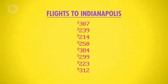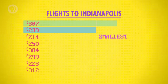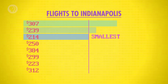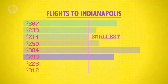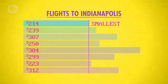Let's start with a simple algorithm. First, let's scan down the array to find the smallest number. Starting at the top with 307 — it's the only number we've seen, so it's also the smallest. The next is 239 — that's smaller than 307, so it becomes our new smallest number. Next is 214, our new smallest number. 250 is not. Neither is 384, 299, 223 or 312. So we've finished scanning all numbers, and 214 is the smallest. To put this into ascending order, we swap 214 with the number in the top location. Great, we sorted one number.